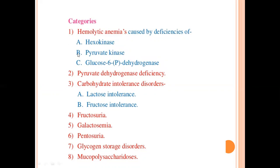Enzyme B is Pyruvate Kinase. Pyruvate Kinase was responsible for converting phosphoenol pyruvate in glycolysis. If pyruvate kinase is not functional, then glycolysis will not be complete. Enzyme C is Glucose 6-phosphate dehydrogenase. We discussed this enzyme when talking about the HMP shunt, or pentose phosphate pathway. Glucose 6-phosphate dehydrogenase is a rate-limiting enzyme, and glucose is converted into 6-phosphogluconate.